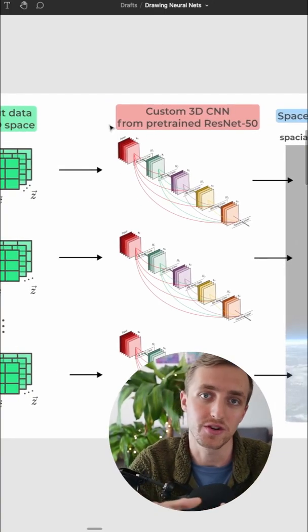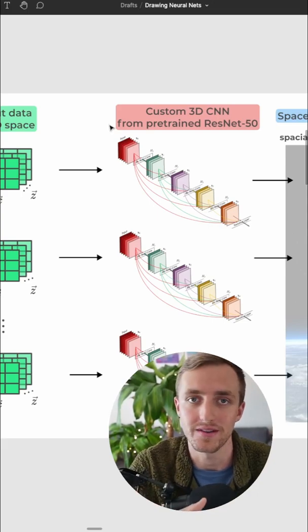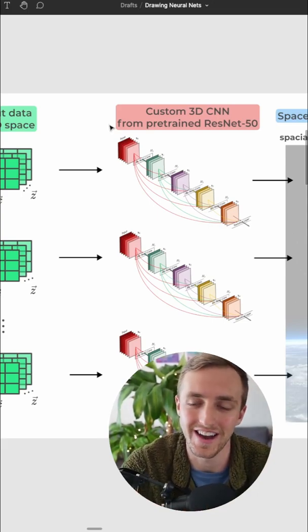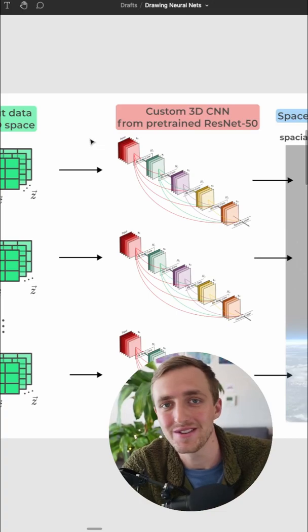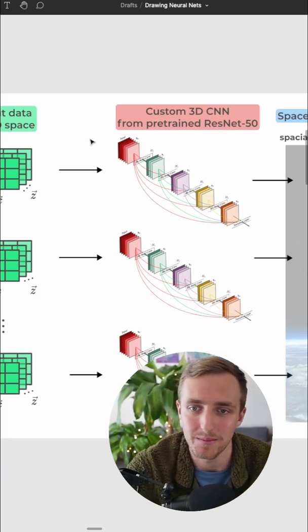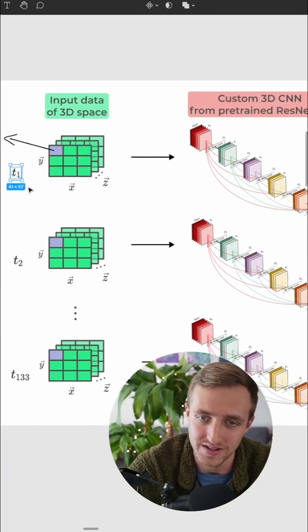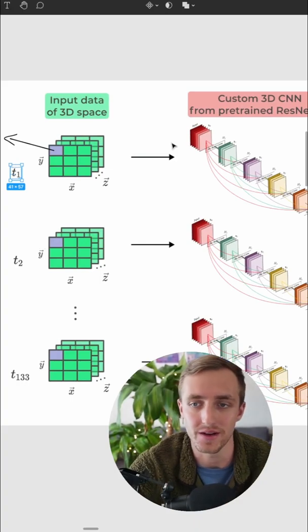CNNs are great at capturing spatial relationships. They're phenomenal. Without question, this is the right idea for processing spatial dependencies, but they don't do anything about time. You can see I separate the time steps here, and each time step separately goes through a CNN.